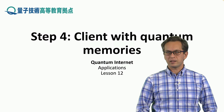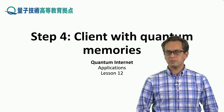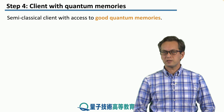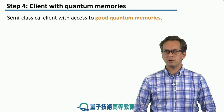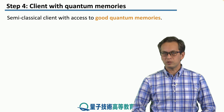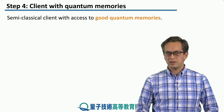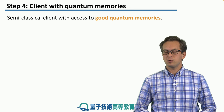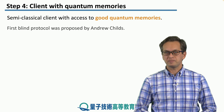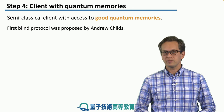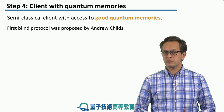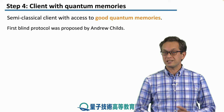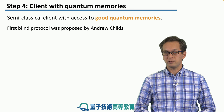Step 4: Client with quantum memories. This is our first concrete protocol about blind quantum computation. It uses a semi-classical client that has access to good quantum memories. This protocol was first proposed by Andrew Childs, and is actually the first blind quantum protocol.